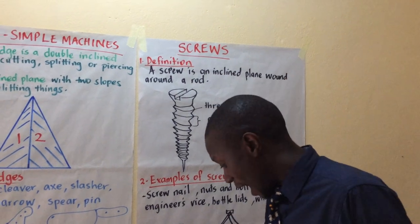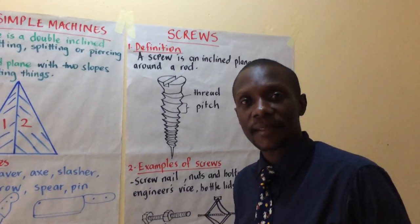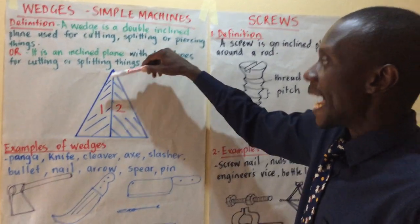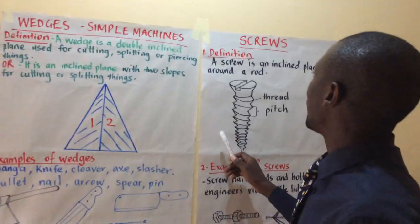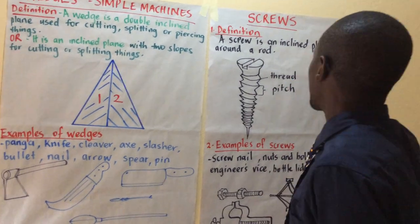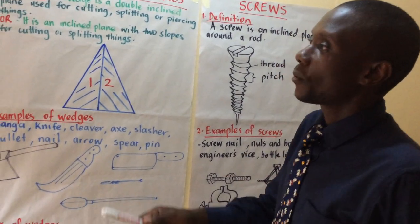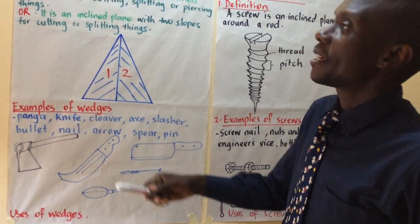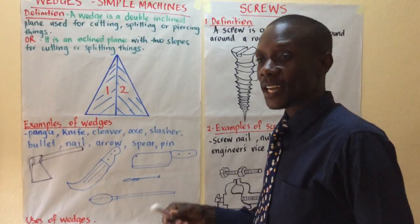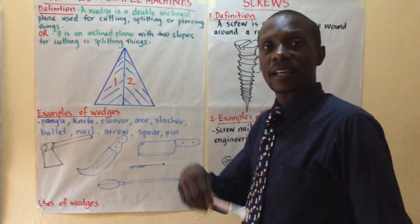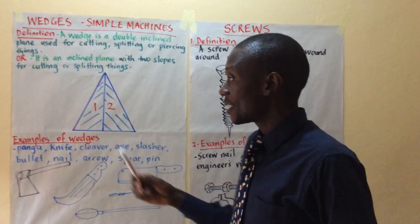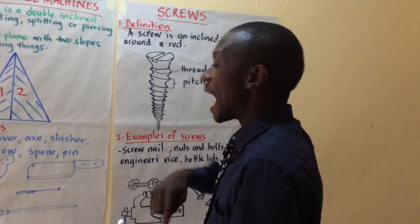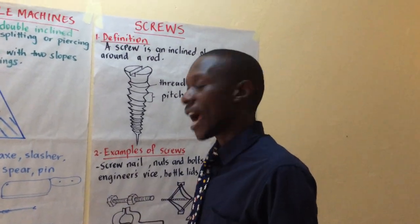Most of these simple machines are interrelated with each other. That's why a wedge is called a double inclined plane, and for the screw we also use the inclined plane concept. With pulleys, some may be called levers, and the wheel and axle can be called two rotating levers. In a way or another these machines are interrelated — it is like they took an inclined plane and wound it around a rod.